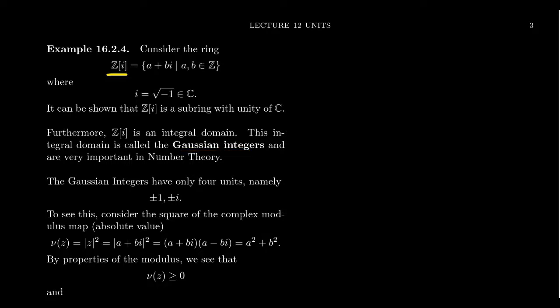The ring of Gaussian integers Z sub i, this would be all the integer combinations of an integer with a purely imaginary number. So that is to say all the numbers of the form a plus bi where a and b are both integers.